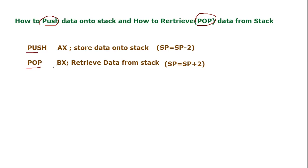Push AX is a statement which is used to store the value of AX onto the stack. AX is a 16-bit register, so a 16-bit value will be pushed onto the stack. Remember, the stack will always store information in word format. This tutorial is easy to understand if you've followed the previous stack tutorial. Whatever value is pushed last will be on the very top of the stack.